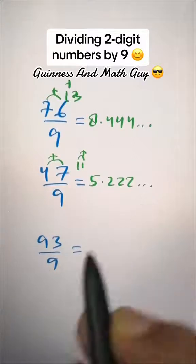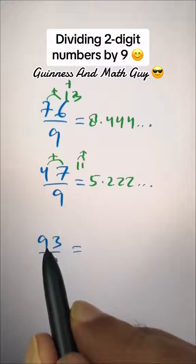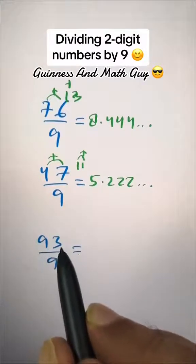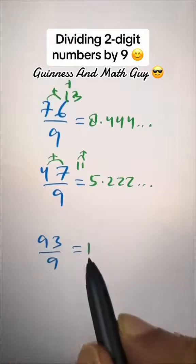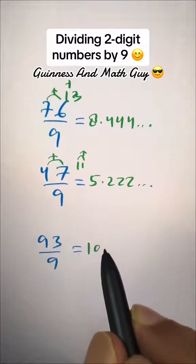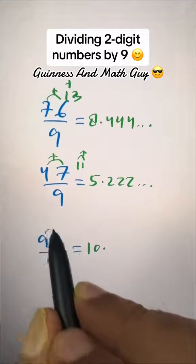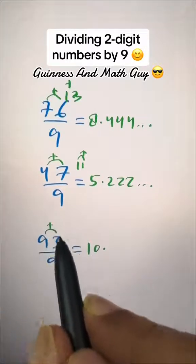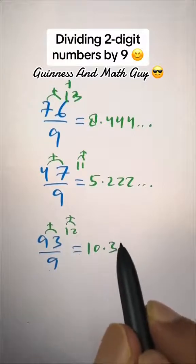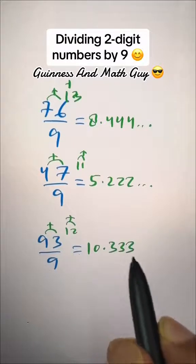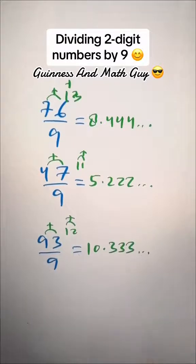And here, nine plus three is twelve — two-digit number — so instead of nine, write ten. Then point: nine plus three is twelve, then one plus two is three, so three three three and so on.